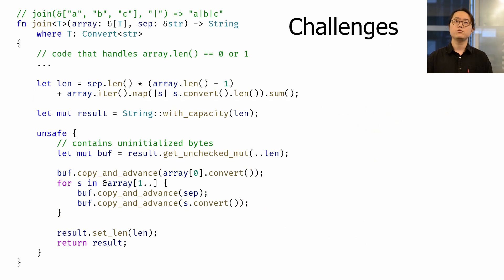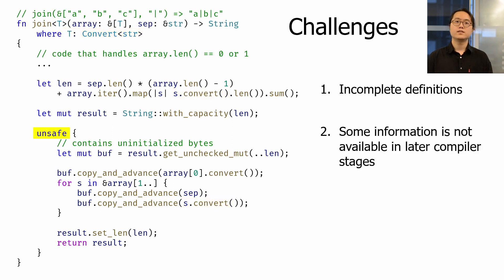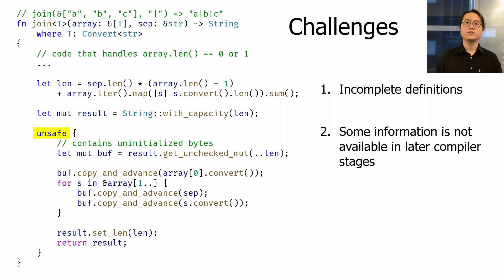This example shows a few challenges in detecting such bugs. The first difficulty is incomplete definitions: we need to detect bugs in this function without knowing the concrete type T and its corresponding convert implementation, so the bug detector must make assumptions on such holes. The second difficulty is that some information is not available in later compiler stages — for instance, safety of APIs is only used at the type-checking stage and discarded during compilation, and does not exist in later stages such as LLVM IR.